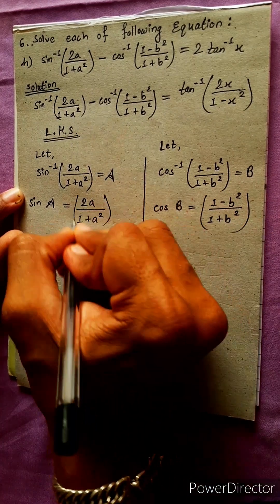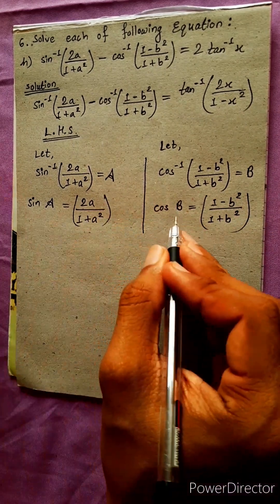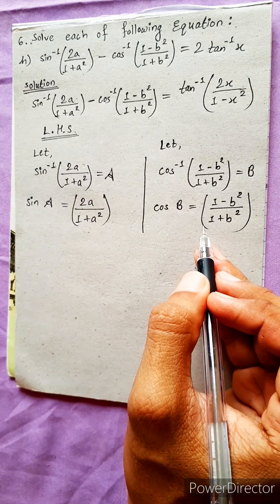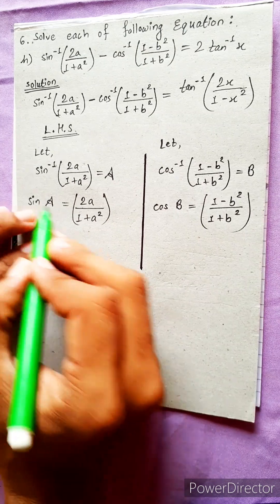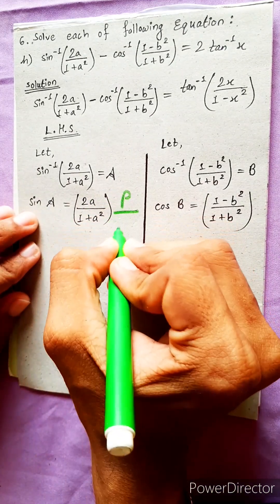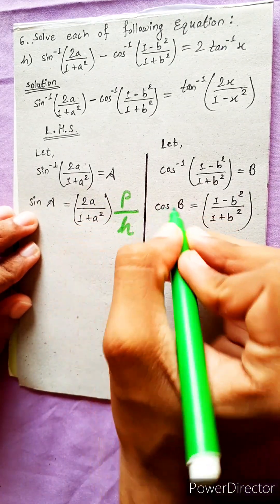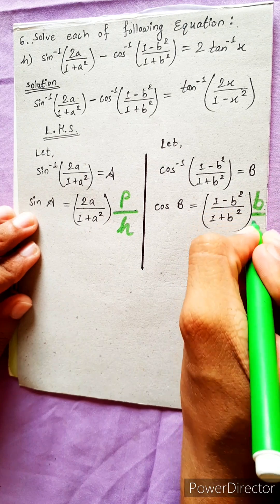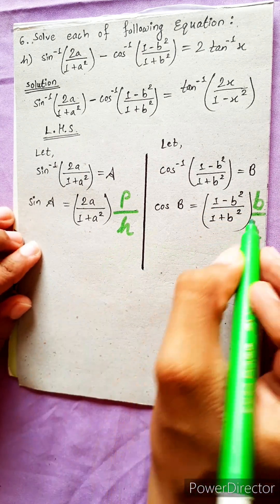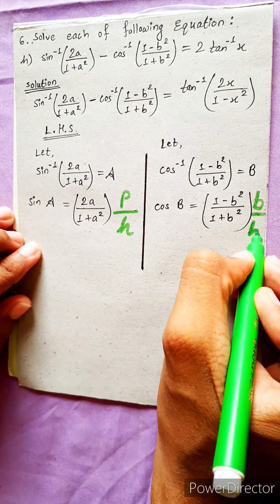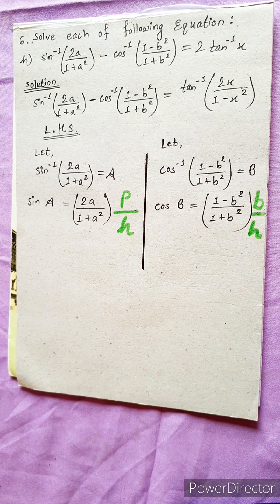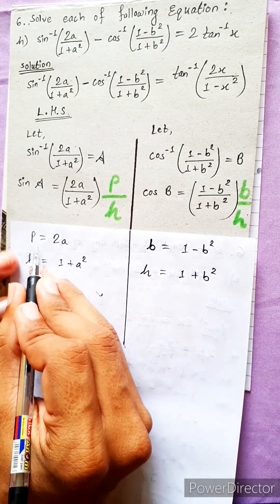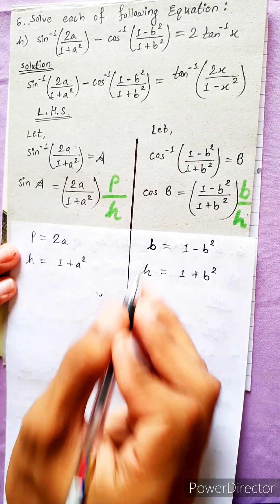This involves sin A and cos B. In triangle terms, sin(A) equals perpendicular over hypotenuse (P/H), and cos(B) equals base over hypotenuse (B/H). These are the same ratio expressions. In terms of 2A, we will apply this.